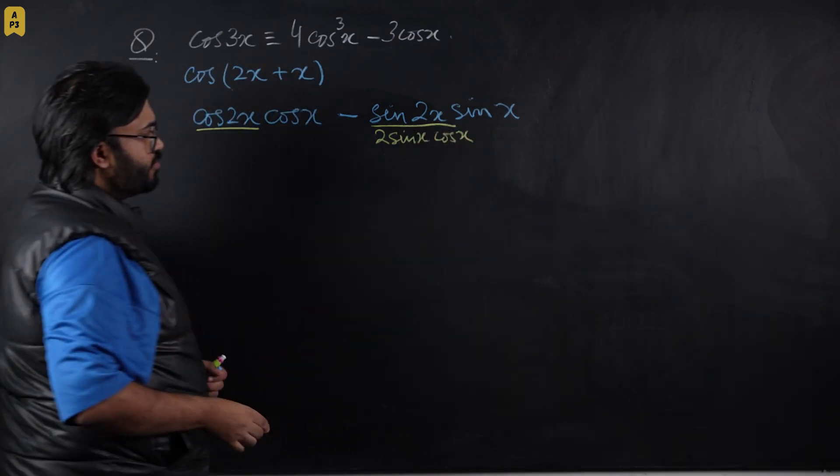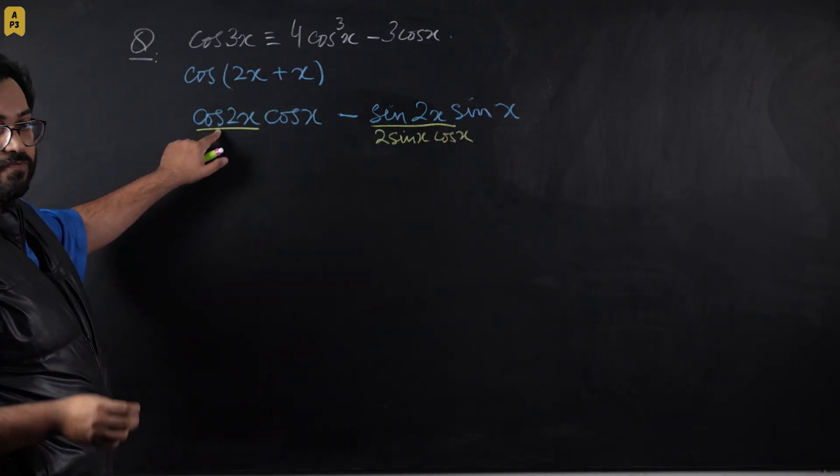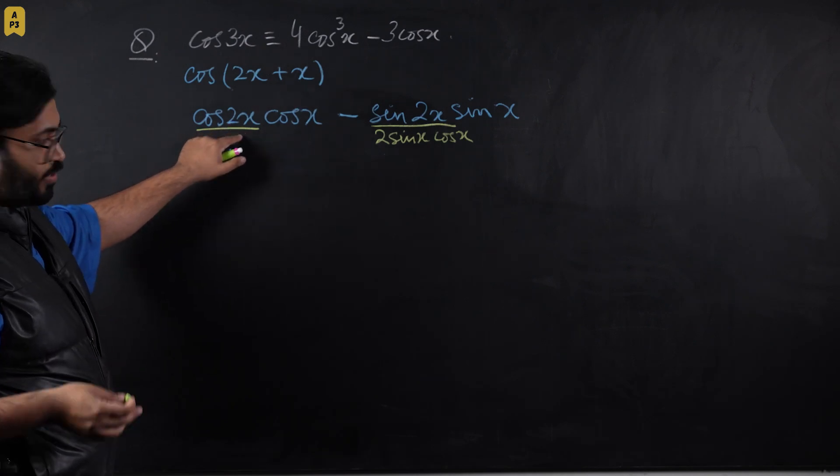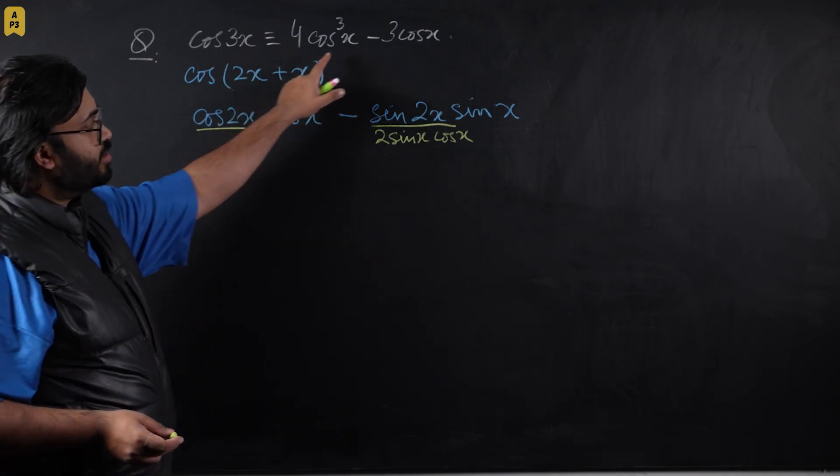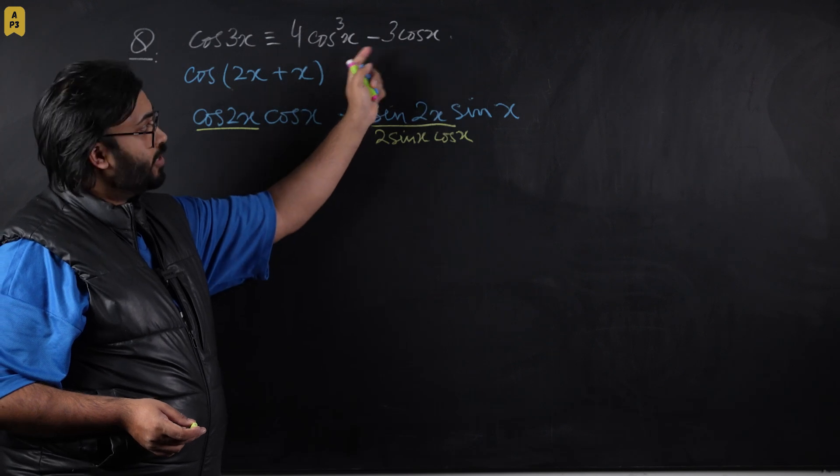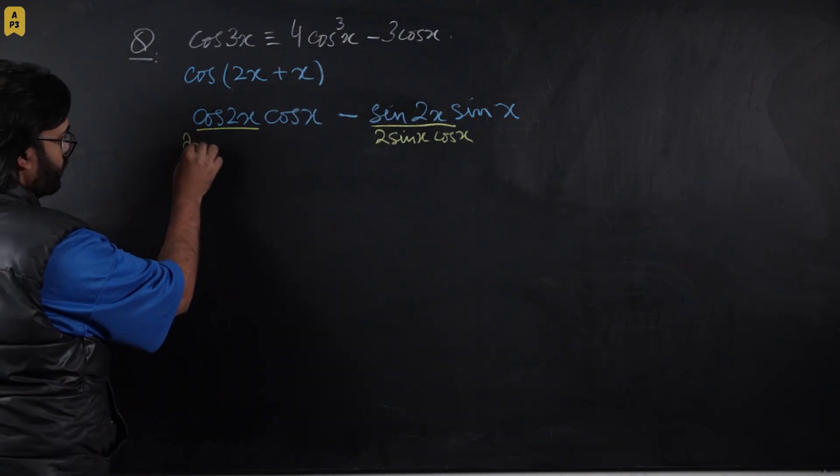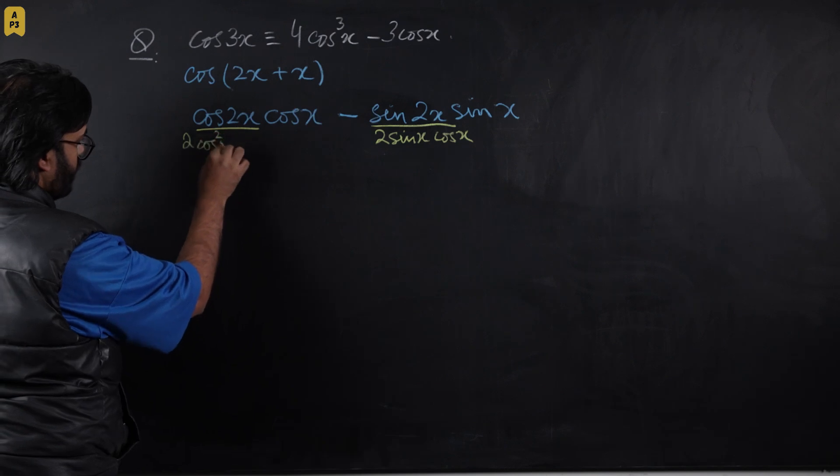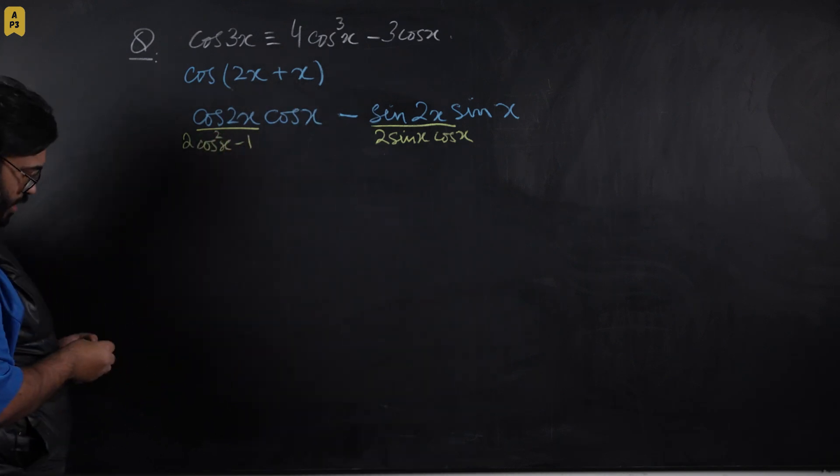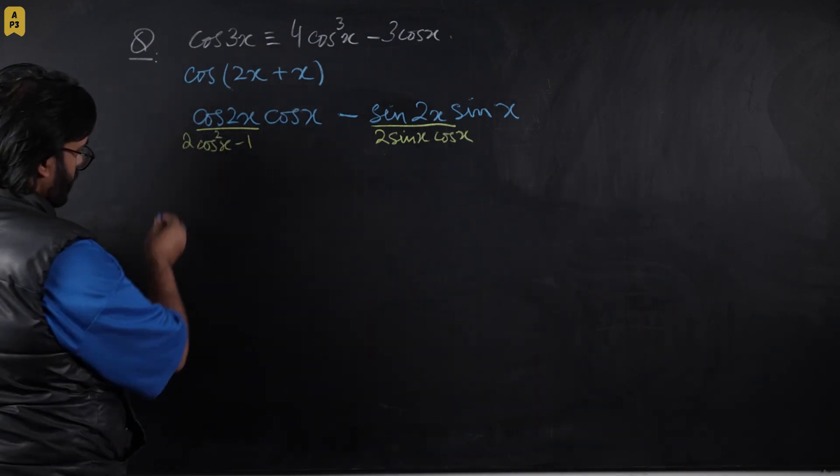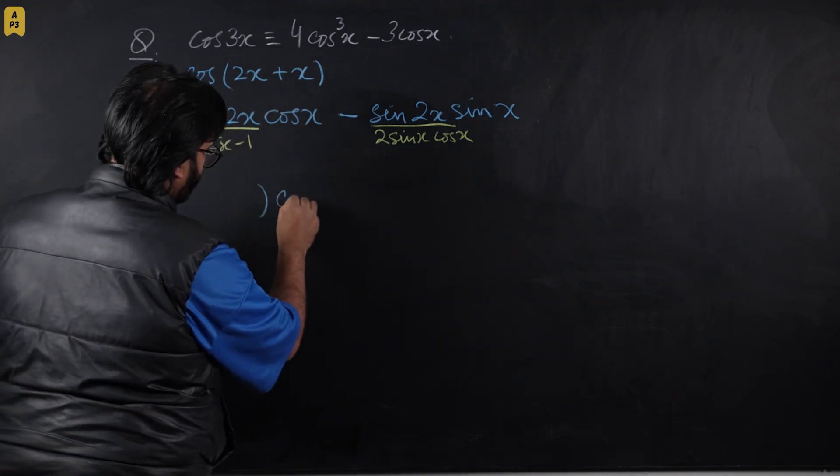For cos 2x, we have three different variations. I'm going to choose the variation with cos only because my final answer is in terms of cos, so I'm going to use 2cos²x - 1.